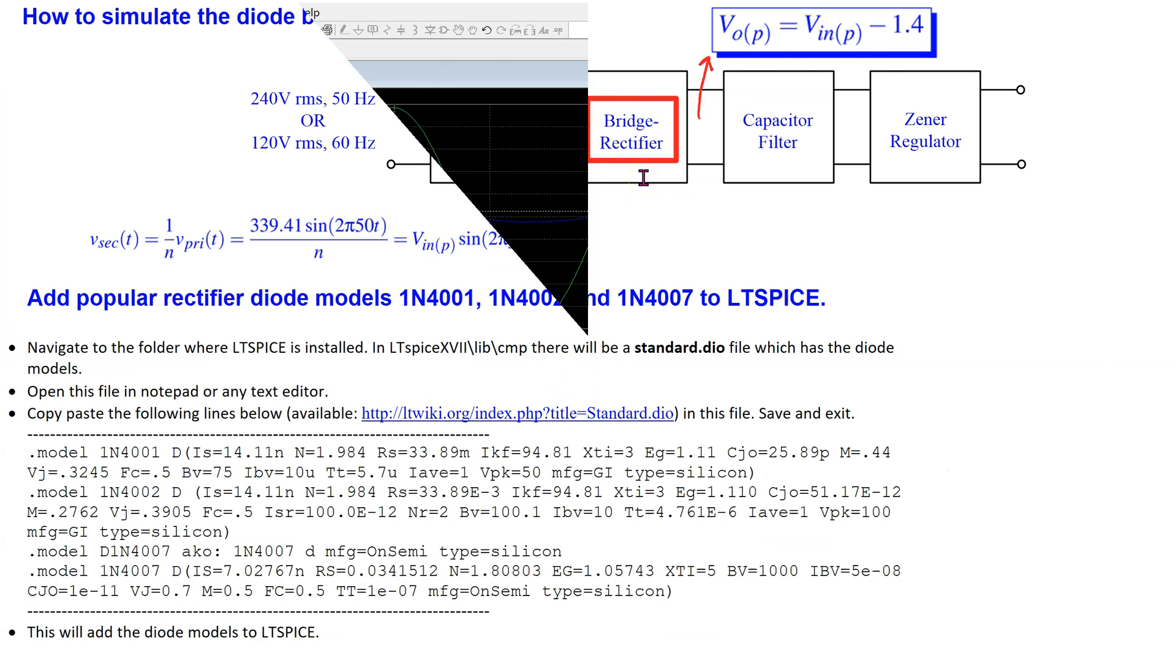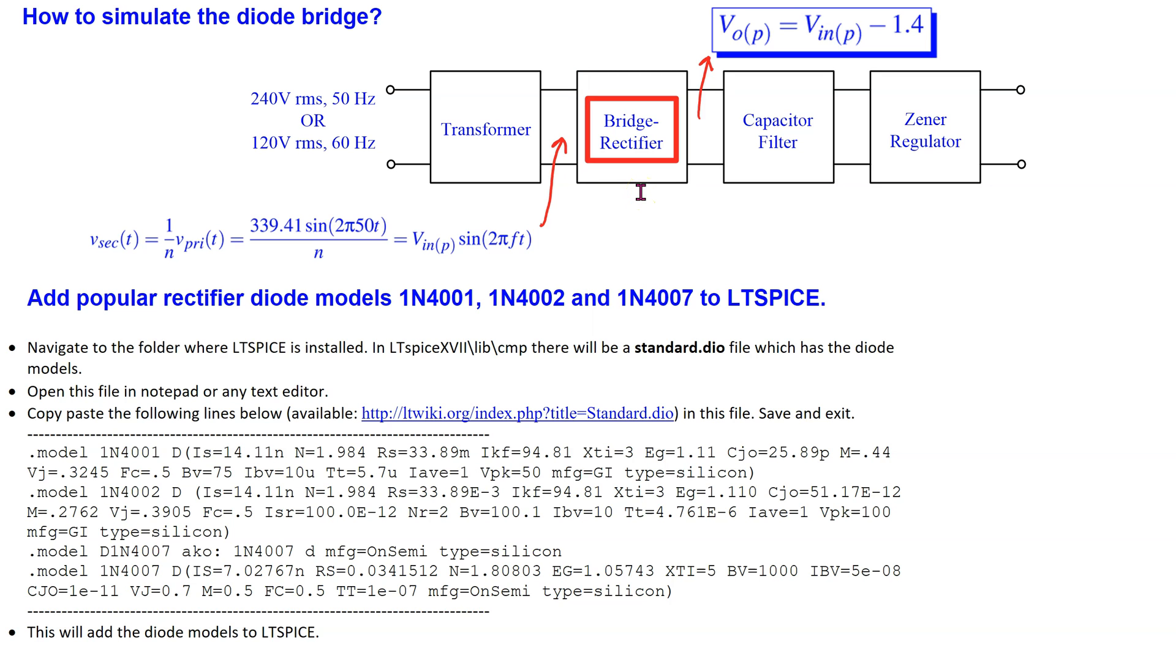Next, we look at how to simulate the diode bridge. The diode bridge rectifier takes the sinusoidal waveform from the transformer secondary as input and produces a full wave rectified voltage at its output. The peak value of the rectified output voltage is the input voltage peak minus 2 diode drops.